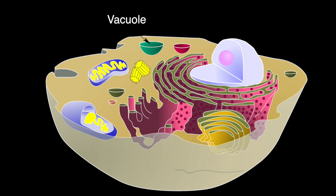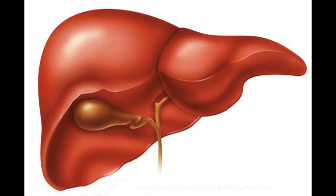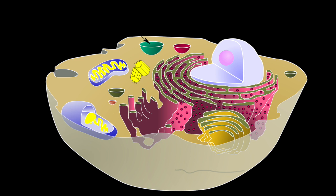The vacuoles and vesicles store food and nutrients that will be used in the future by the cell. They also filter out toxins from incoming products — they're kind of like the liver. The liver filters out harmful materials that are incoming to the body, and so do the vacuoles and vesicles.